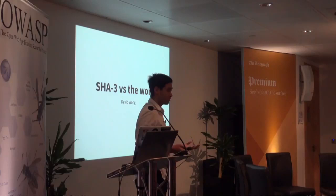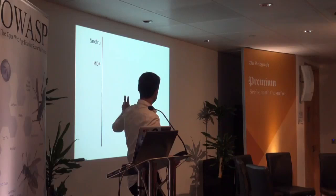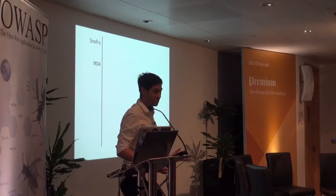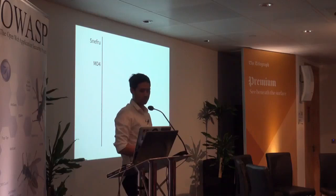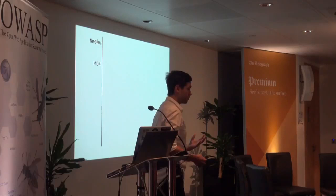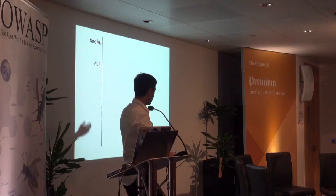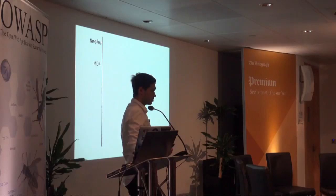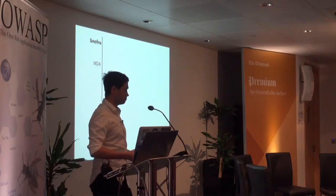I came here to tell you a story and I always start with a timeline. I start with two hash functions, Snuffle and MD4, which were released in the beginning of the 90s and were kind of the de facto hash functions. Snuffle quickly got broken using differential cryptanalysis, usually used to attack block ciphers. MD4 remained unbroken for some years, so it became the de facto standard.